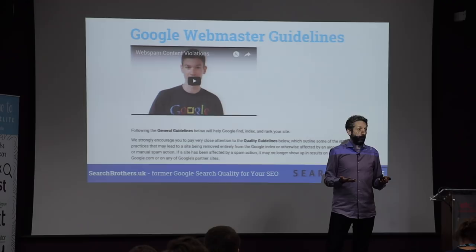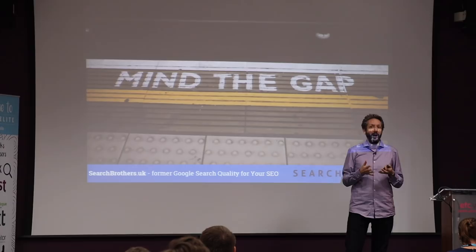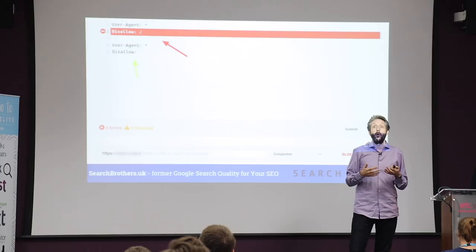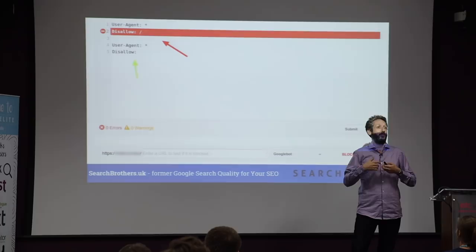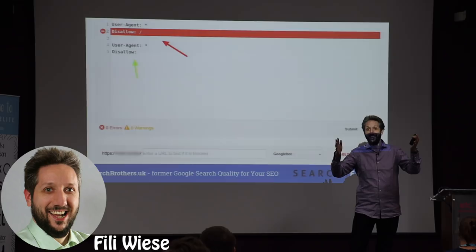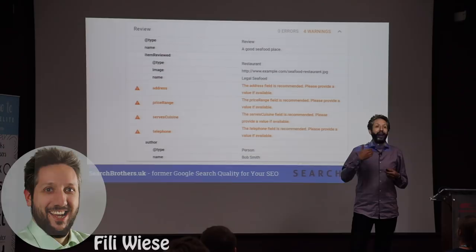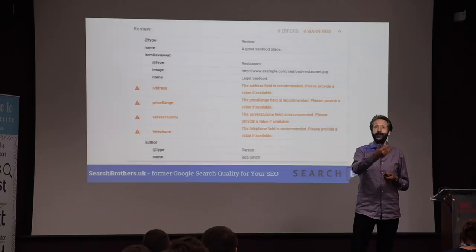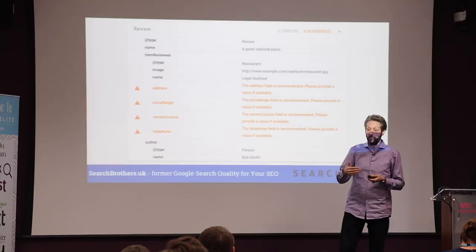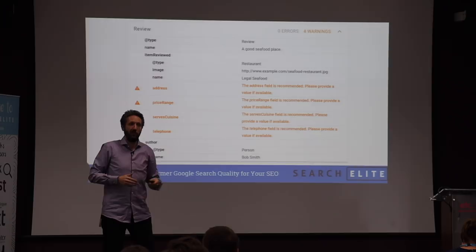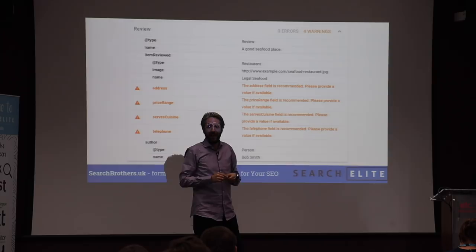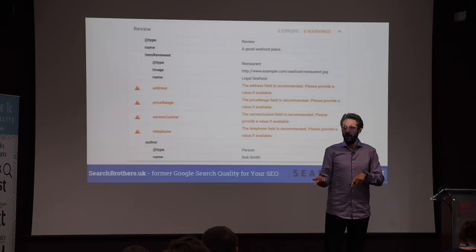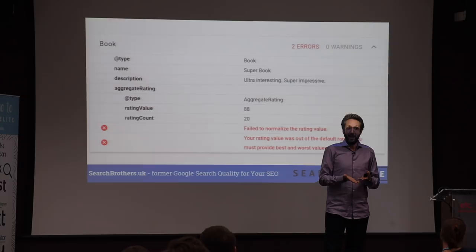Some common issues that people run into — it's actually quite easy to mess things up when it comes to structured data. First of all, don't block it in robots.txt. You'd be surprised how often that happens — yes, we did all of this implementation of structured data, but we're blocking it in robots.txt. Another one is forgetting the recommended fields. If you can add them, please do, because these may become required at some point. You do need to keep checking recommended fields in case they update those to required, because the documentation does change. What may be recommended today, six months down the line may be a required field. And don't forget also the required fields — you'd be surprised how often that breaks the schema.